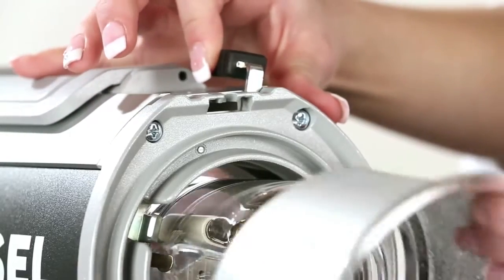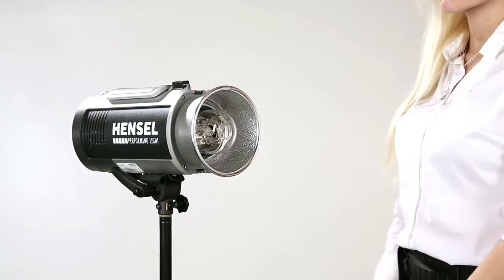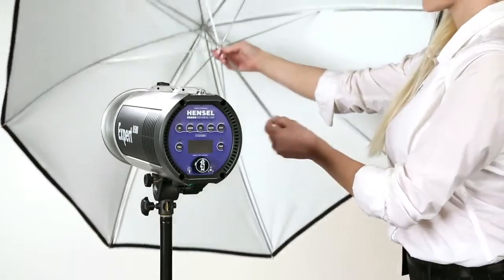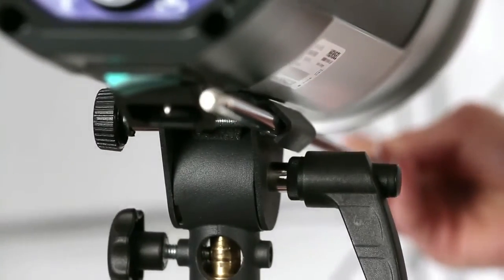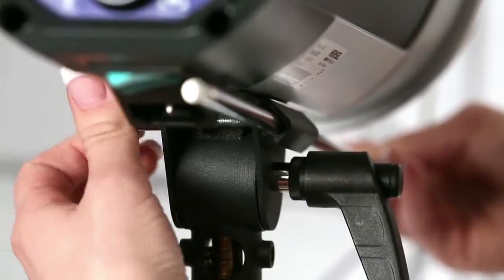Reflectors and softboxes are easily and securely mounted with the reflector quick change mechanism. The umbrella holder is located directly on the tilt head which allows you to install the umbrella at your preferred distance to the Expert D unit.